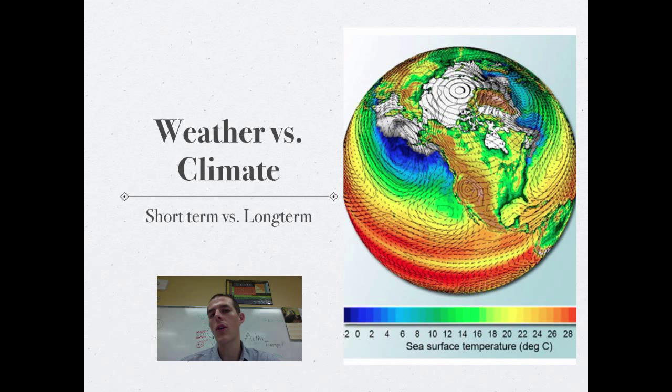Weather is what is happening right now or in the next couple days. So you log on to your phone, you check your weather app. That's telling you what's going to happen over the next five to seven days. Weather is fairly difficult to predict.